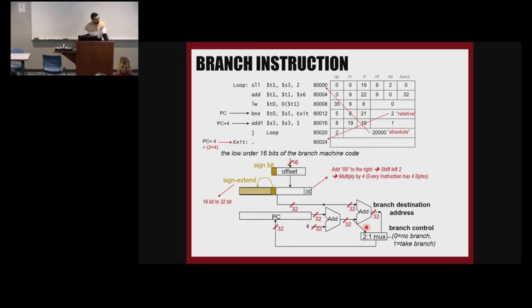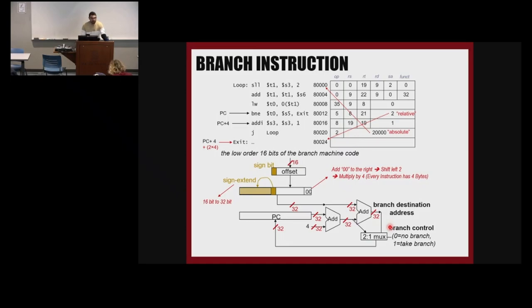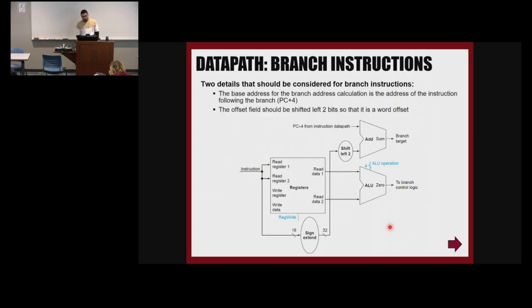We calculate the offset multiplied by 4 and add it with PC plus 4. Now we have both options. Based on branch — if the condition is met, you branch to the label; if it is not met, you go to the next instruction. The next instruction is PC plus 4, and the target address is calculated already. We calculate both of them every time. This is the overhead in the processor. We have a multiplexer that chooses where we want to go next, choosing between PC plus 4 and the branch target address.